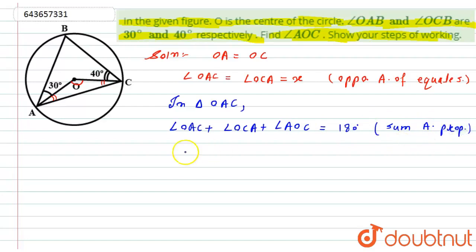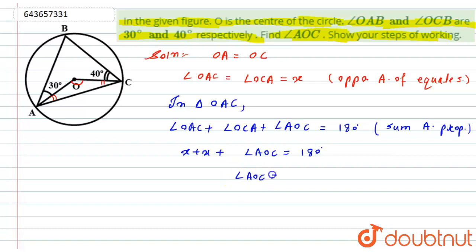Substituting, x plus x plus angle AOC equals 180 degrees. Therefore, angle AOC equals 180 minus 2x. Let this be equation number one.